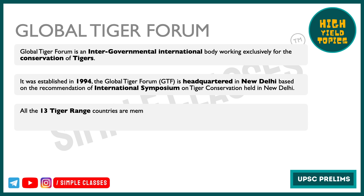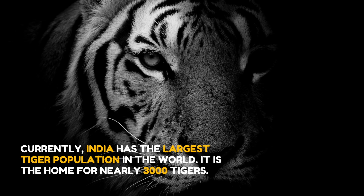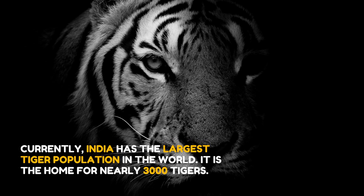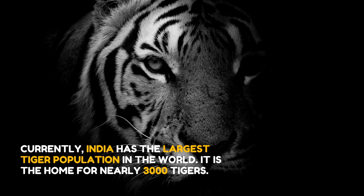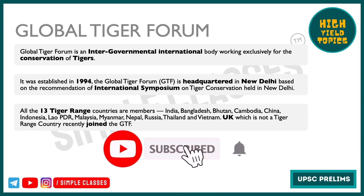Iski member countries mein all 13 tiger range countries shamil hain, which includes India, Bangladesh, Bhutan, Cambodia, Nepal, Russia, etc. India is one of the founding members of this forum. Additionally, UK, which is not even a tiger range country, has recently joined this forum.